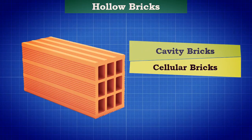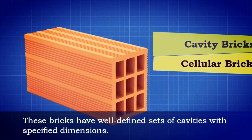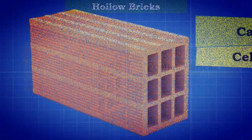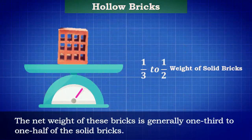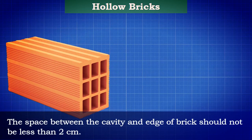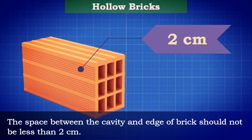Hollow Bricks. These bricks are also commonly known as cavity bricks or cellular bricks. They have well-defined sets of cavities with specified dimensions. The net weight of these bricks is generally one-third to one-half of that of solid bricks. The space between the cavity and the edge of the brick should not be less than 2 cm.